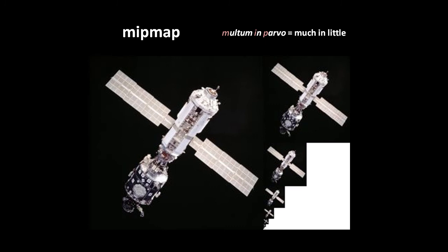When moving closer towards and farther away from textures, the transition from one texture of a MIP map to the next might show up as a sudden change in texture quality. To smooth these transitions, we can use trilinear filtering, which interpolates between the results of bilinear filtering on the two closest matching MIP map textures.